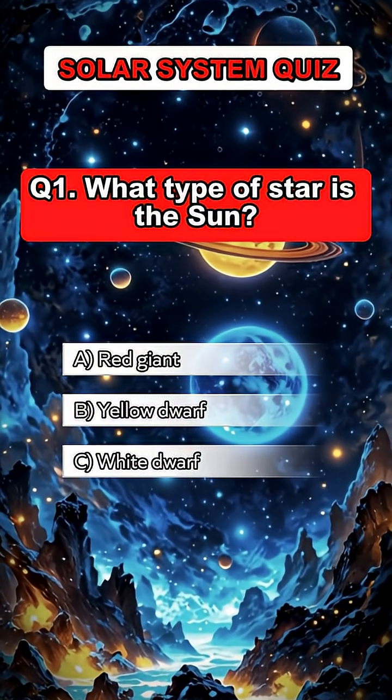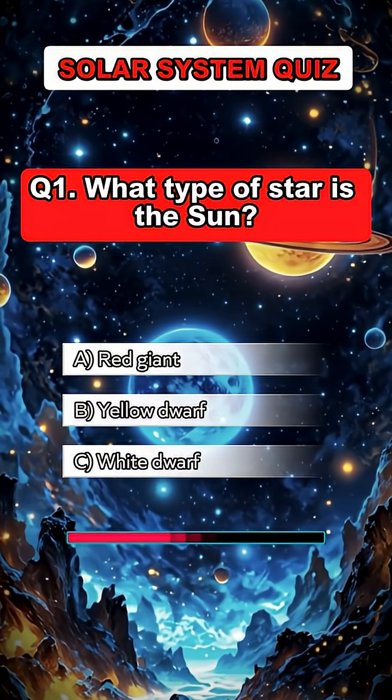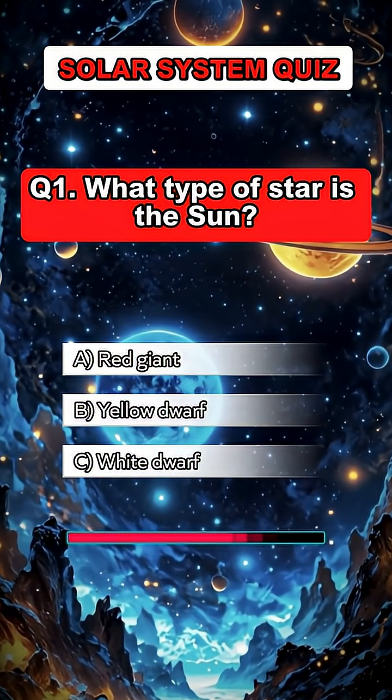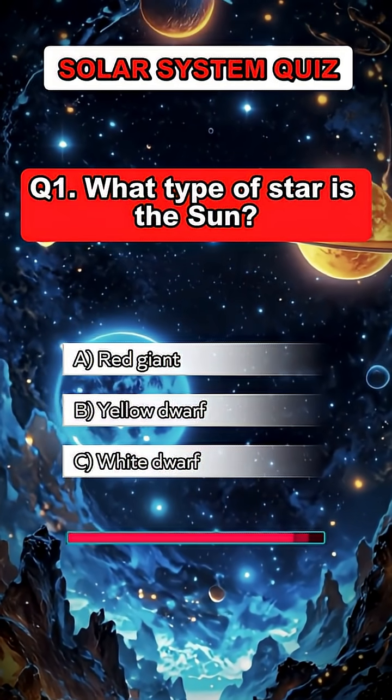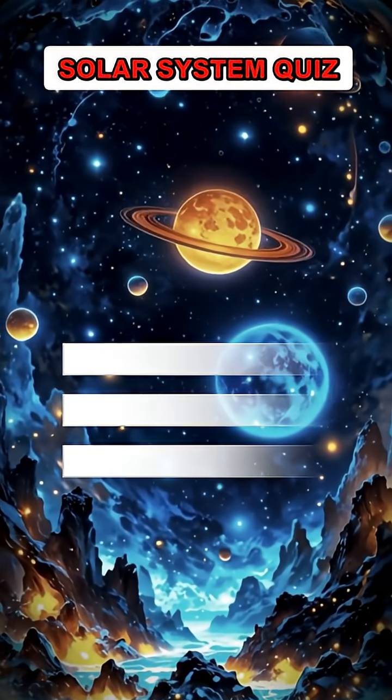Question 1. What type of star is the Sun? Answer B. Yellow dwarf.